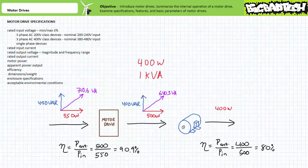A motor drive manufacturer may specify an efficiency rating of the drive — for example, if the drive necessitates 550 watts of real power input to produce 500 watts out, its efficiency would be 90.9%. Additionally, motor drives are generally specified using dimensions, enclosure specifications, and acceptable environmental conditions. Another general means of classifying motor drives is the control method employed.